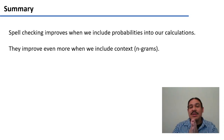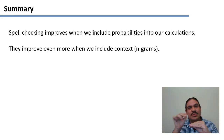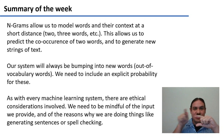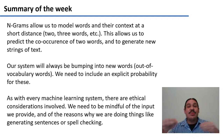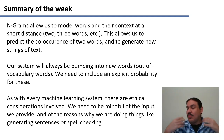In summary, spell checking improves when we include probabilities, and it improves even more when we include context using n-grams. These language models capture our intuition that some things in context look right and some do not. As a summary for the week: n-gram models allow us to model sequences of human words and the context of words at a short distance — two or three words — which lets us predict when two words will happen together and generate new strings of text. Our systems are always going to be bumping into new out-of-vocabulary words, and we need to include probabilities for those. As with any computer system, there are ethical considerations in what input we use to calculate probabilities and why we want spell checking in the system.